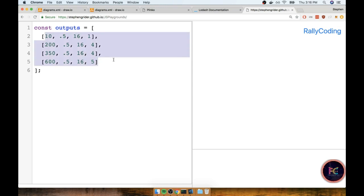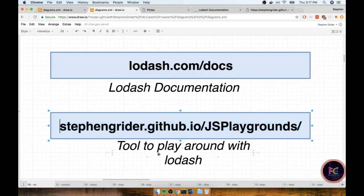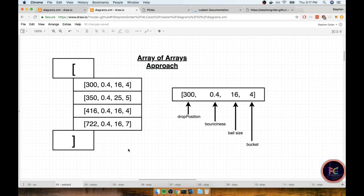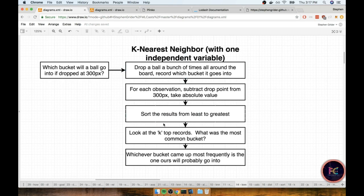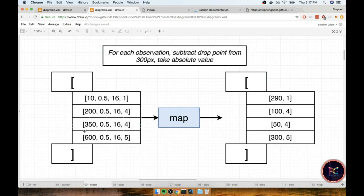If this structure looks strange, remember we're using that same style of array of arrays for storing our data. Each inner array represents a different ball drop - first element is position, last one is our bucket. Now let's write out all the different steps for solving our k-nearest neighbor algorithm. I took every stage along this diagram and put it together in diagram format so we can understand the different lodash functions we're going to use.